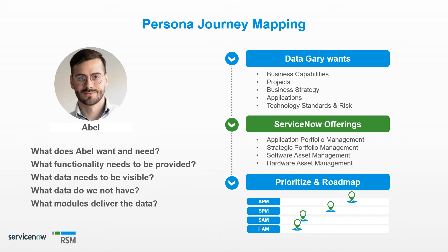In this example of a journey map, Abel wants to understand projects and investment innovation in relation to business capabilities, strategies, and applications. Abel also needs to know the technology his business applications are built on to understand technical risk and cost. We know Abel's organization has a strategic partnership with ServiceNow and is taking a 'why not ServiceNow' approach where possible. What Abel needs to get him what he wants is application portfolio management, strategic portfolio management, and software and hardware asset offerings. These can be prioritized and then incorporated into the organization's ServiceNow platform roadmap.